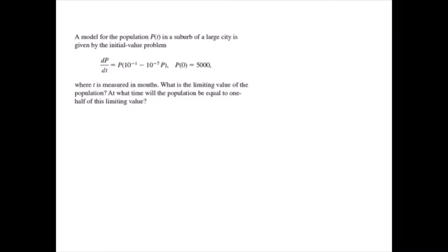A model for the population p(t) in a suburb of a large city is given by the initial value problem: dp/dt equals p times (10^-1 - 10^-7 times p), where p(0) equals 5,000, where t is measured in months.